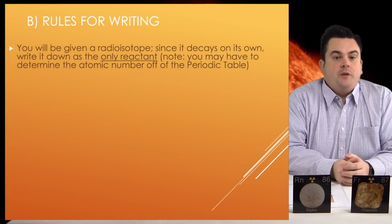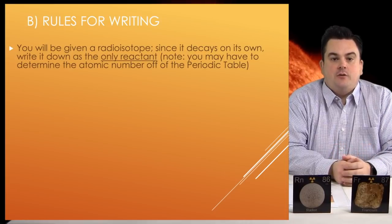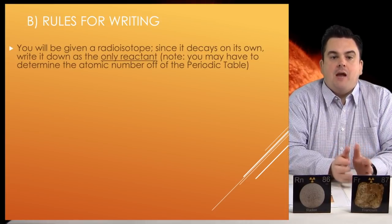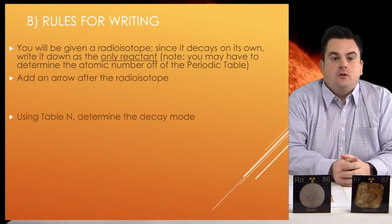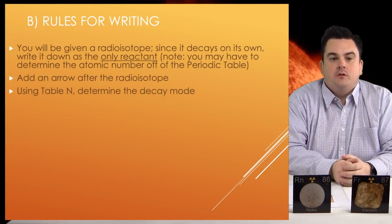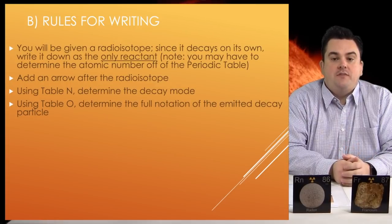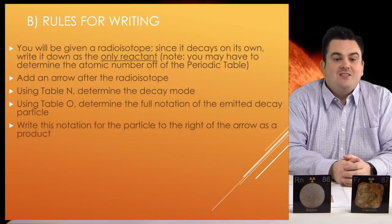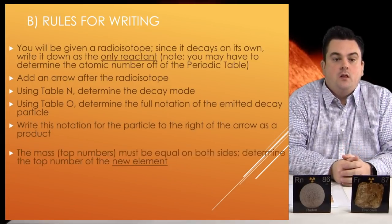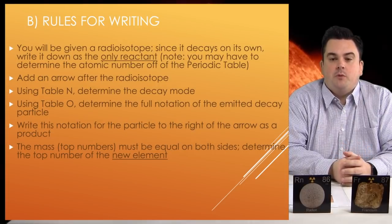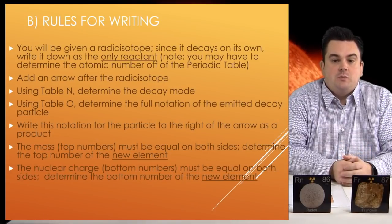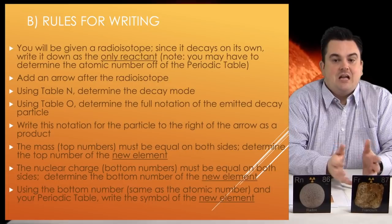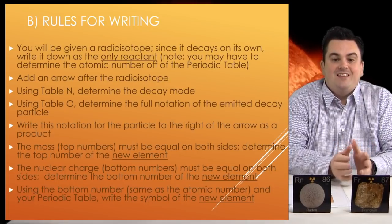Rules for writing decay equations. You will be given a radioisotope — since it decays on its own, write it down as the only reactant. Note: you may have to determine the atomic number from the periodic table. Add an arrow after the radioisotope. Using Table N, determine the decay mode. Now using Table O, determine the full notation of the emitted decay particle and write this notation to the right of the arrow as a product. The mass (top numbers) must be equal on both sides — determine the top number of the new element. The nuclear charge (bottom numbers) must be equal on both sides — determine the bottom number of the new element. Using the bottom number, same as the atomic number, and your periodic table, write the symbol of the new element.